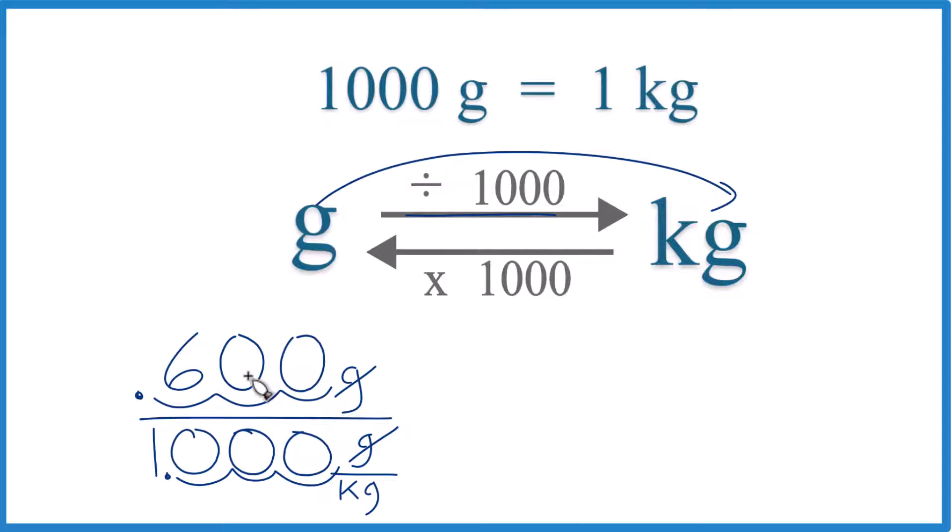So 600 grams equals 0.600 kilograms. You could write that like this. You don't need to include these zeros after the 6. Some teachers will want you to multiply by a conversion factor. It's really the same thing, but let's give it a try.